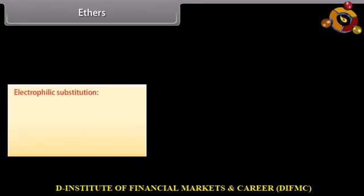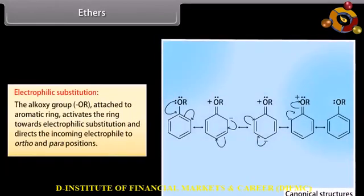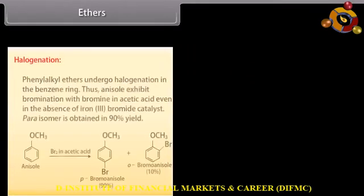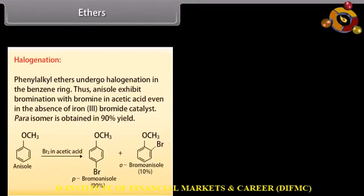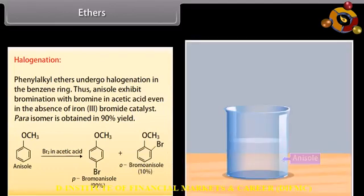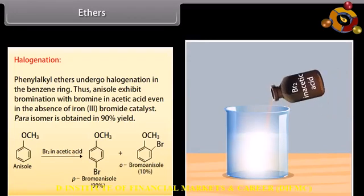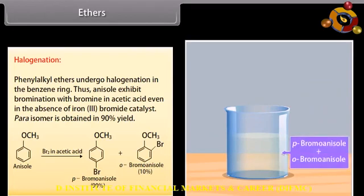Electrophilic substitution: the alkoxy group attached to the aromatic ring activates the ring towards electrophilic substitution and directs the incoming electrophile to the ortho and para positions. Halogenation: phenyl alkyl ethers undergo halogenation in the benzene ring. Anisole undergoes bromination with bromine in acetic acid even in the presence of iron(III) bromide catalyst, with the para-isomer obtained in 90% yield.